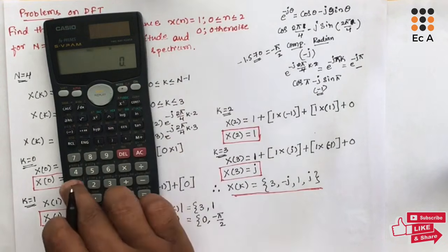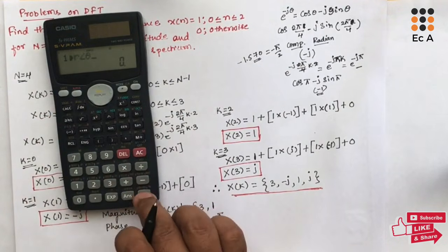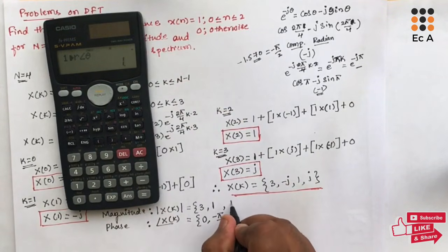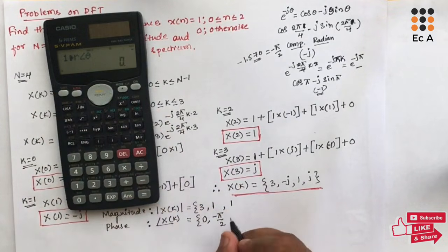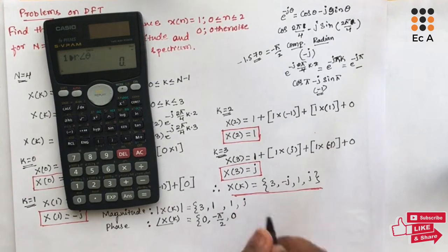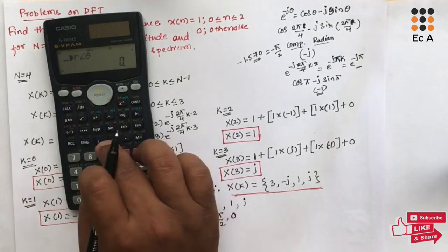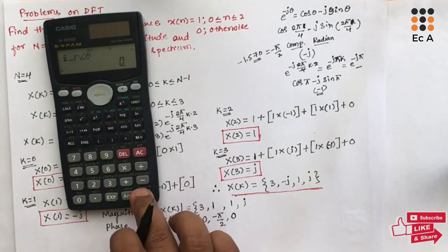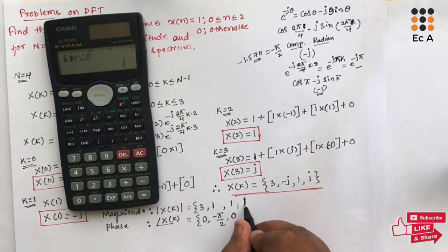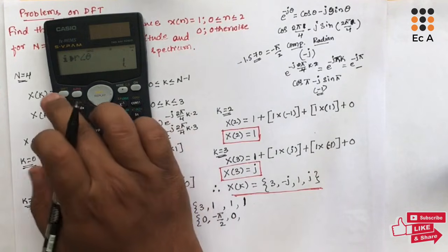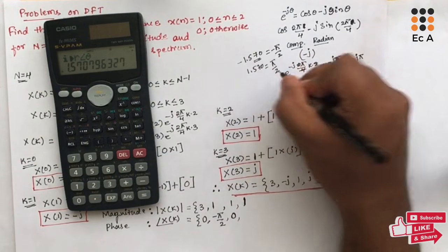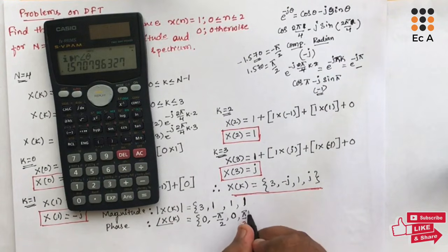For X[2] = 1, the magnitude is 1 and the phase angle is 0. For X[3] = j, enter i in complex mode: the magnitude is 1, and shift equals shows 1.570, which is π/2. So the phase spectrum for X[3] is π/2.